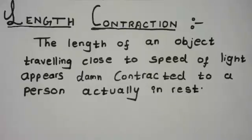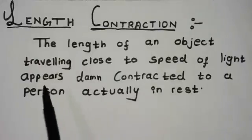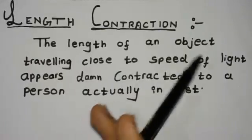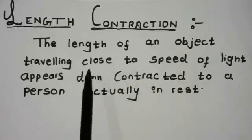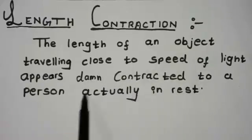As you can read, what is length contraction? In the theory of relativity, the length of an object traveling close to speed of light appears damn contracted to a person actually in rest.